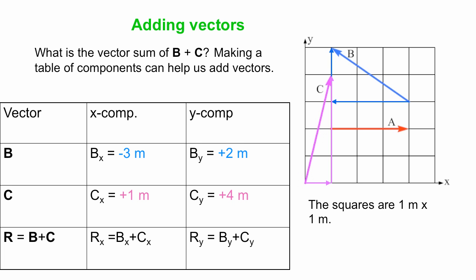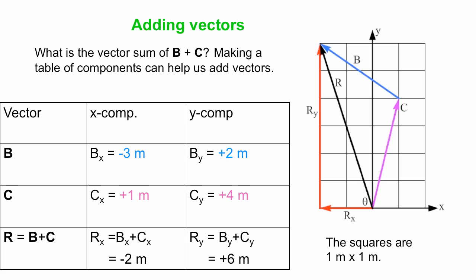Then we know, if we add the two vectors together, the total x component of the resultant is simply the x components added together of our original vectors, B and C. Similar thing in the y direction, Ry is By and Cy. Okay, so we put everything together, minus three plus one is minus two meters. You can see on the diagram here, the x component of R is two units to the left, and Ry is six units up, that comes from plus two, plus four being plus six.